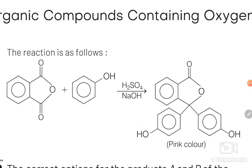Phenol is ortho- and para-directing for electrophilic aromatic substitution, and if we have a bulky electrophile, then it is para-directing due to steric hindrance. In this case, phthalic anhydride is the electrophile and it attaches to the para-position of two different phenol molecules, resulting in the formation of phenolphthalein. If the para-position of phenol is already occupied by some other group, then this reaction is not possible.